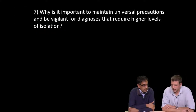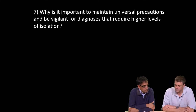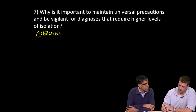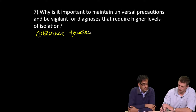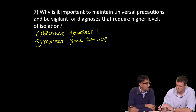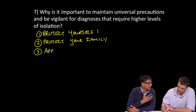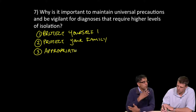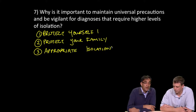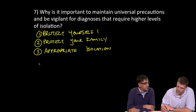Why is it important to maintain universal precautions and be vigilant for diagnoses requiring higher levels of isolation? We don't want to become patients ourselves. We deal with very deadly illnesses in the emergency department, including Neisseria meningitidis and meningococcemia. The key is to protect yourself, protect your staff, and protect other family members. Ensure there is no spread through droplet precautions: wear a mask, wear a gown, put the patient in a room where their secretions cannot contact other patients or staff. And think about prophylaxis — bacterial prophylaxis.